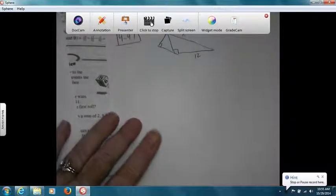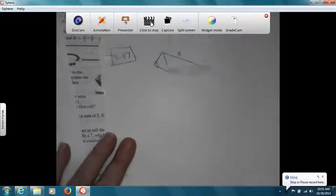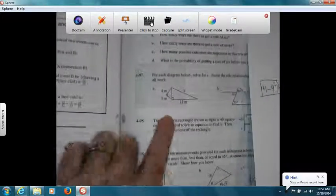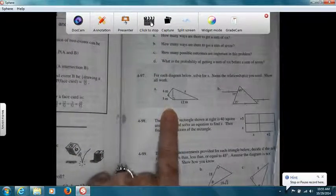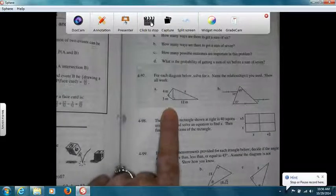This is 4-97. The picture's in the book, it's a lot nicer. There it is. It says we have to solve for X, name the relationship you used, show all work.